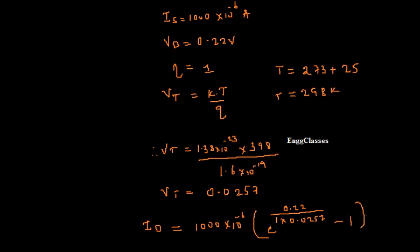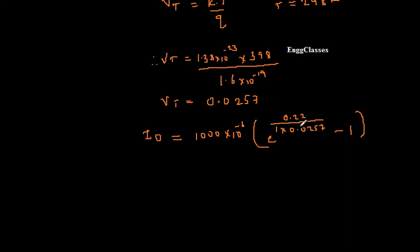Just get the calculator: 0.22 divided by 0.0257, get the exponential of that value, subtract 1, and multiply with 1000 into 10 to the power minus 6. Finally, the value of the diode current is 6.6332 amps.